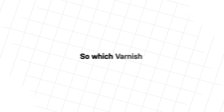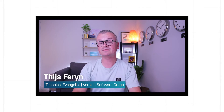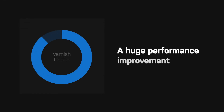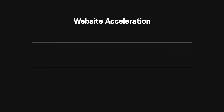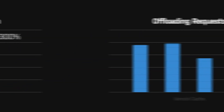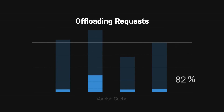So which Varnish should you use and when? As an open-source project, Varnish Cache doesn't come with professional services or support, but it does have an active community for troubleshooting and problem-solving. Using Varnish will still have a huge improvement on the performance of your website, and for website acceleration, Varnish Cache will speed up page delivery by 300%, while offloading requests to the origin by up to 99%.